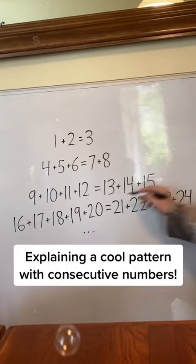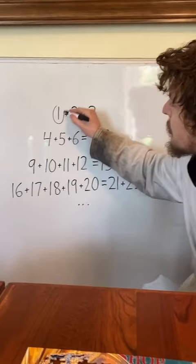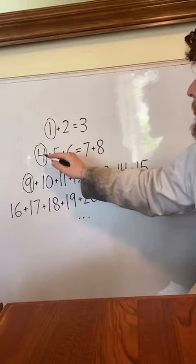Now to see why this pattern works, let's notice that the first number in each of these lines is a square number. And let's take a look at this one, for example, 4, which is 2 squared.